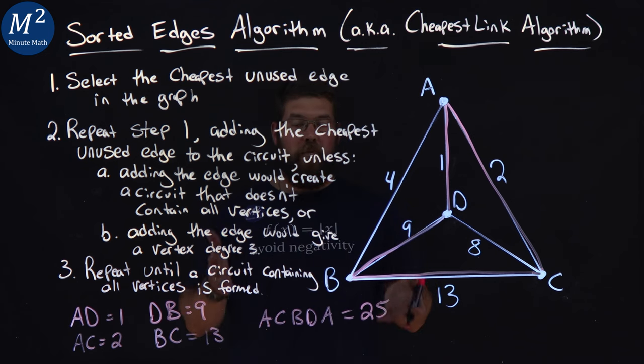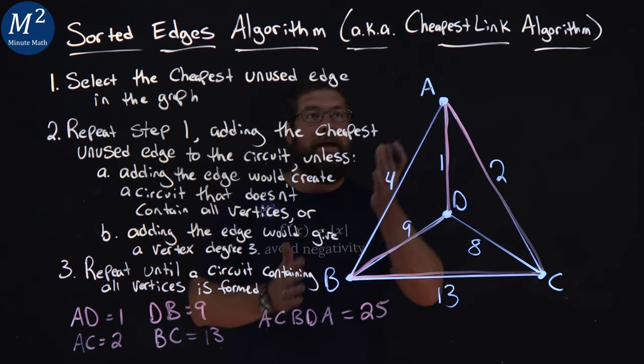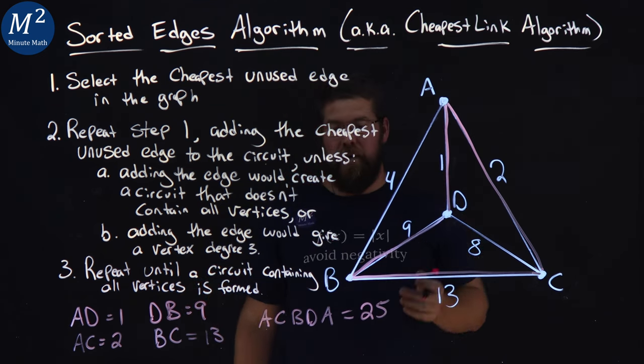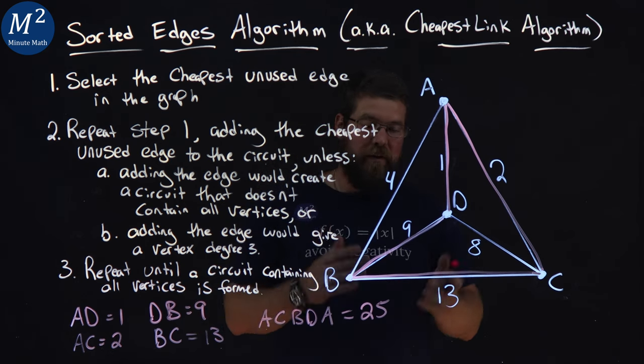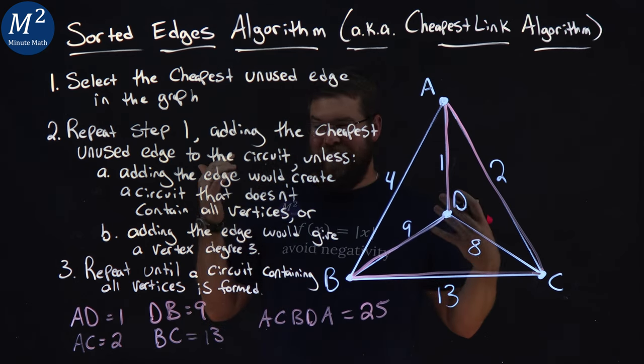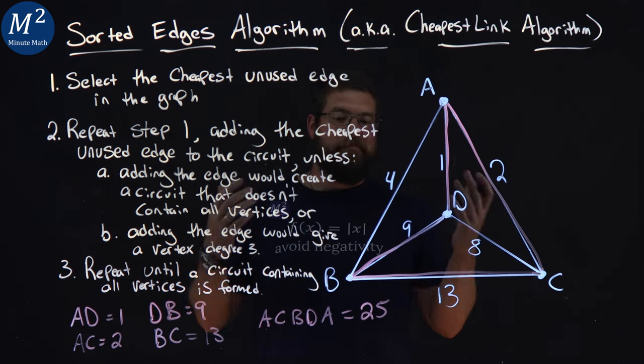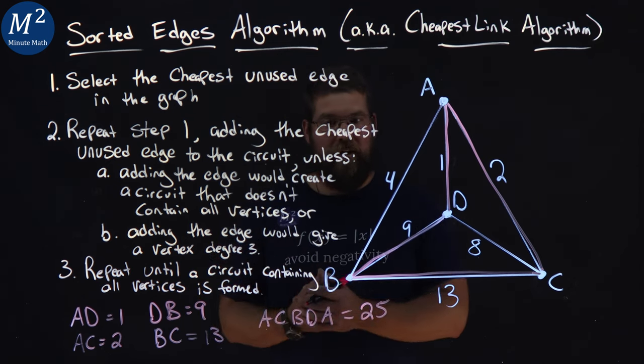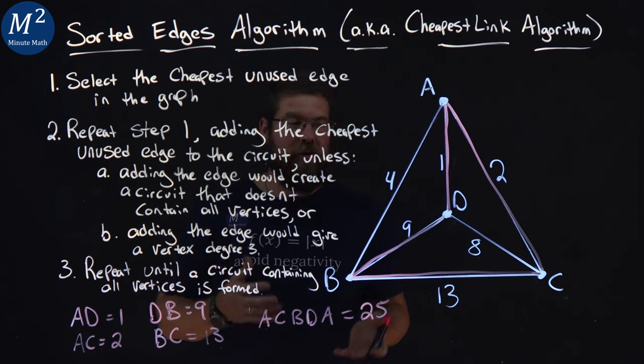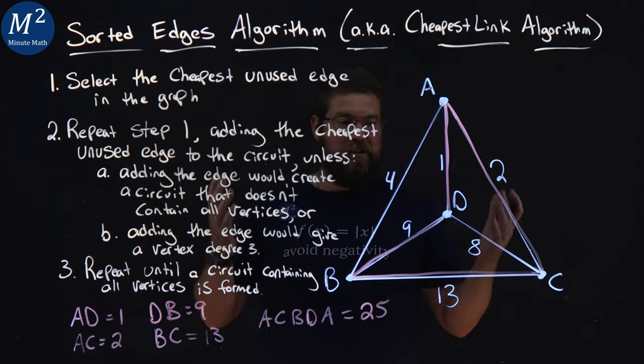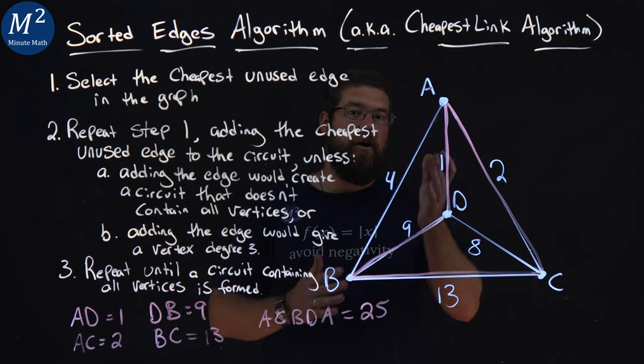And so, there we have it. We've applied the sorted edges algorithm, aka the cheapest link algorithm, and we got our circuit here at 25. Again, it's not the best circuit in this graph. But it's a way to find a circuit there and potentially get the cheapest circuit. But in this case, this is not the cheapest or smallest weight circuit on this graph.